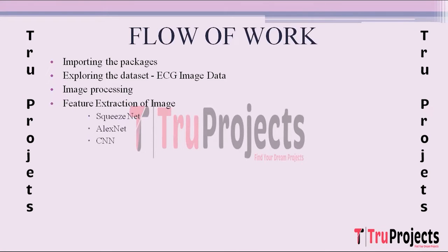The next step is Feature Extraction of Images. SqueezeNet is a compact and efficient deep learning model designed for image classification. LXNet is an early but powerful convolutional neural network used for image recognition. CNNs are networks inspired by the human visual system and are excellent at tasks like image analysis. These models will be used to extract features from images, which then serve as inputs for traditional machine learning algorithms to enhance the accuracy of cardiac abnormality classification.